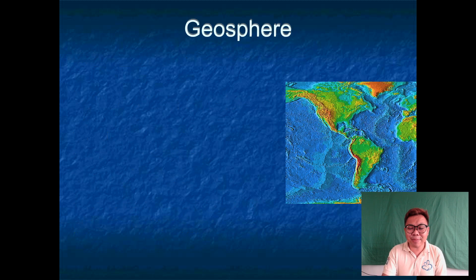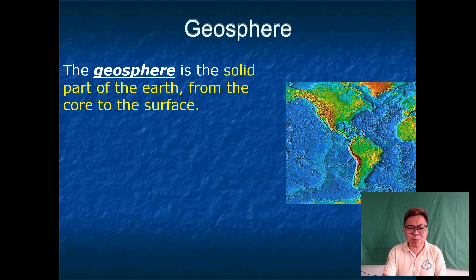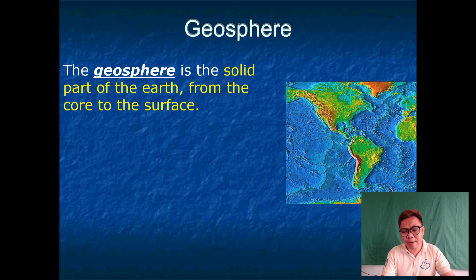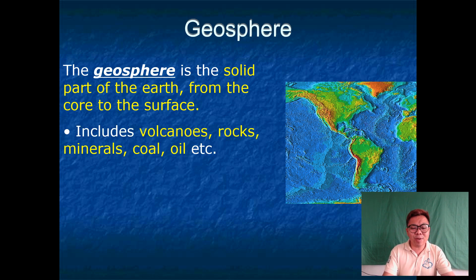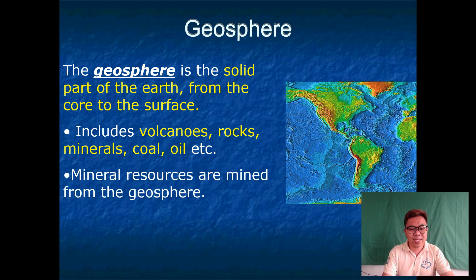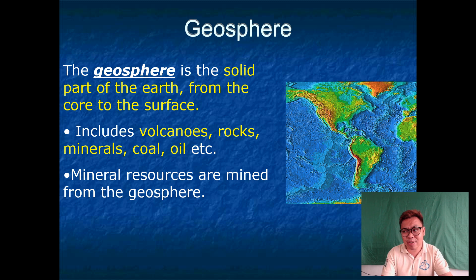Now we have the geosphere. The geosphere is the solid part of the Earth — from the inner core, outer core, mantle, and crust to the surface. It includes volcanoes, rocks, minerals, coal, oil, and many more. Mineral resources are mined from the geosphere; that's the only way we can obtain mineral resources.